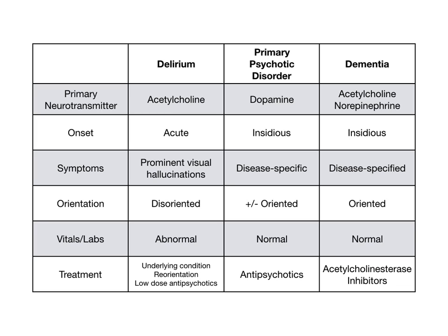In delirium, patients lose orientation acutely due to the delirious onset of symptoms. For vitals and labs, delirium will have abnormal findings — it can be caused by anemia, infection, an acute insult like MI, acute hypoxic respiratory failure, medications, or autoimmune diseases. Anything that alters the body's normal homeostasis can cause delirium, so expect abnormal vitals and labs. Primary psychotic disorders and dementia have no reason for abnormal labs or vitals unless the patient has something else going on.